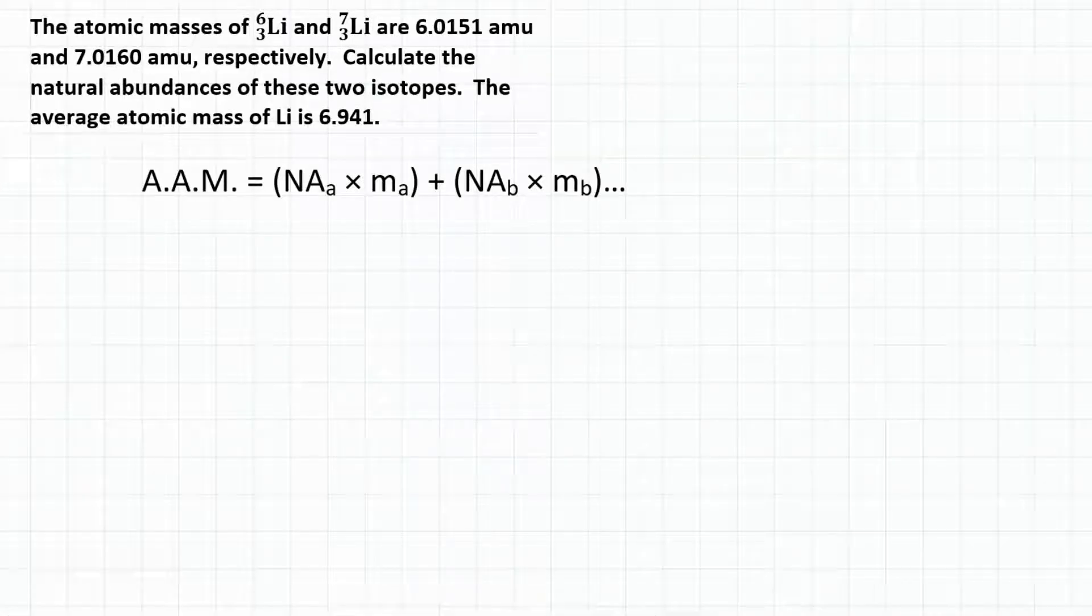Alright everyone, the atomic masses of lithium-6 and lithium-7 are 6.0151 AMUs and 7.0160 AMUs respectively. Calculate the natural abundances of these two isotopes. The average atomic mass of lithium is 6.941.